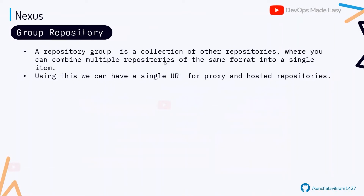A group repository lets you club various repositories together. Instead of giving a separate URL for the proxy and a separate URL for the hosted repository, you can create a group that includes both. This gives you a single URL — a single endpoint — for both proxy and hosted repositories.